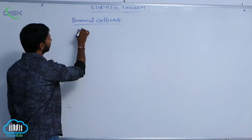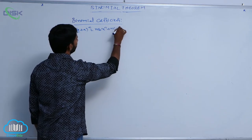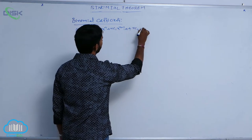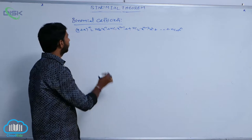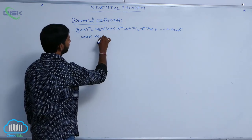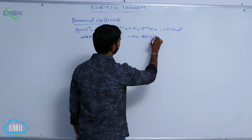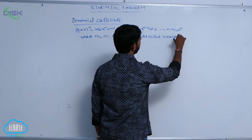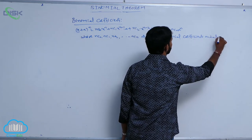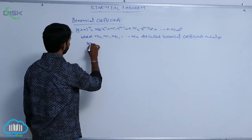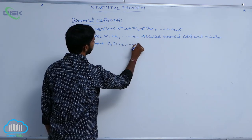The next one is binomial coefficients. Here, (x + a) whole power n is equal to nC0 times x power n, plus nC1 times x power (n-1) times a, plus nC2 times x power (n-1) times a squared, plus and so on, nCn times a power n. Here nC0, nC1, nC2, and so on nCn are called binomial coefficients, and are also represented as C0, C1, C2, and so on Cn.